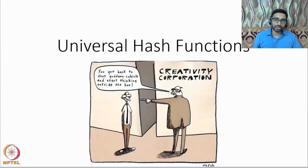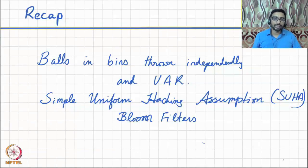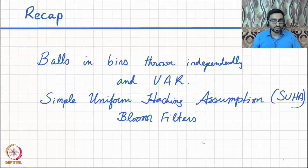Today we are going to talk about universal hashing. Before we define universal hashing, let's recollect what we have looked at so far. We've looked at the balls and bins framework and we analyzed balls and bins under the assumption that each ball is thrown into a bin chosen uniformly at random, and the choices of bins are mutually independent of each other.